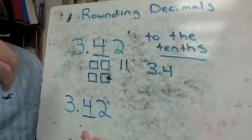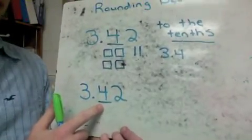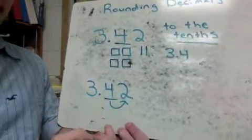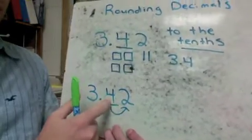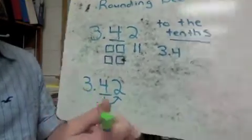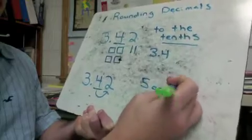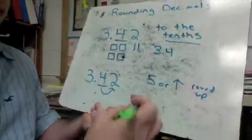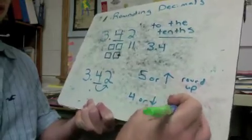The way that you're probably more used to with whole numbers is looking at the place value you want to round, then looking at the number to the right of it. The rule is: if it's 5 or above, you're going to round that number up; if it's 4 or below, we're going to keep it the same. That's a rule you should write down.